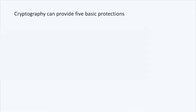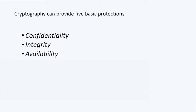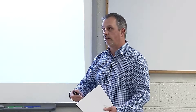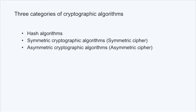Cryptography in IT provides five basic protections: confidentiality of messages, integrity of messages and data, availability by providing files or data to people entitled to access them, authentication to verify that a sender can be verified through cryptography, and non-repudiation — ensuring that someone who performed a particular action cannot deny they did so. There are really three categories of cryptographic algorithms: hash algorithms, and cryptographic algorithms both symmetric and asymmetric, referred to as symmetric ciphers and asymmetric ciphers.